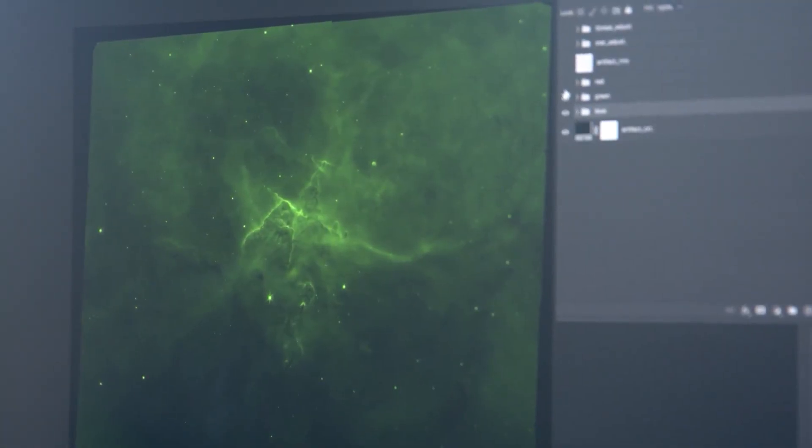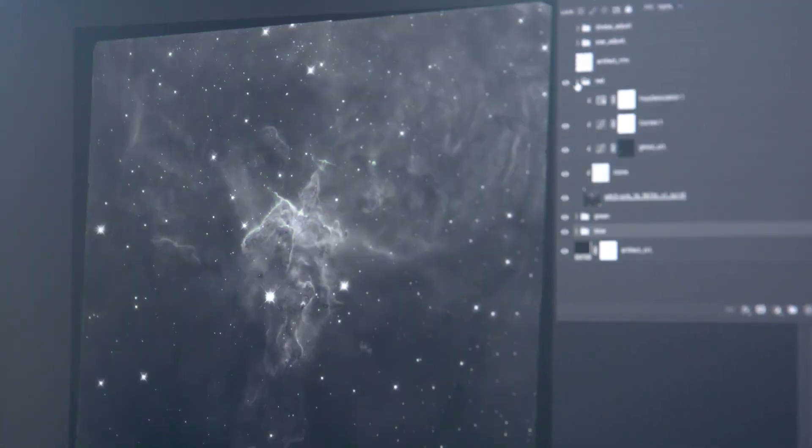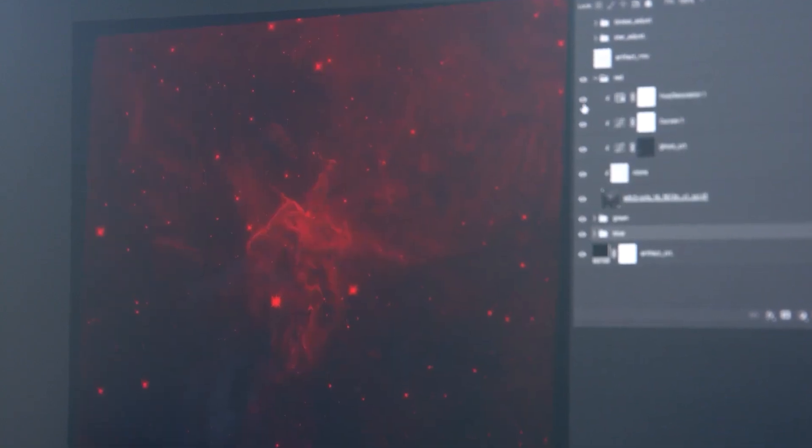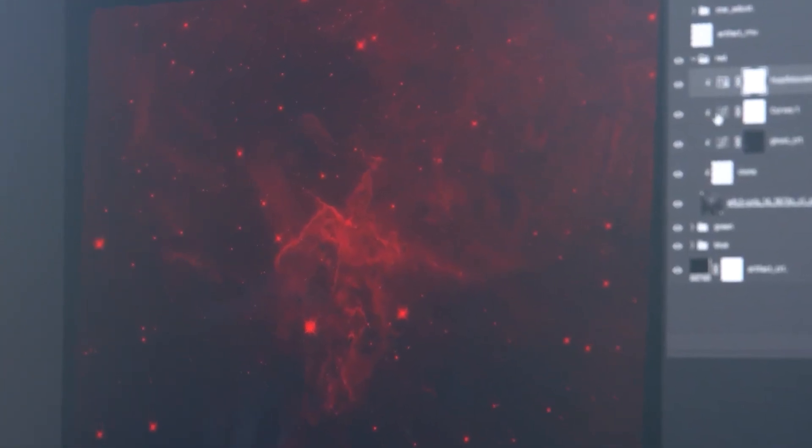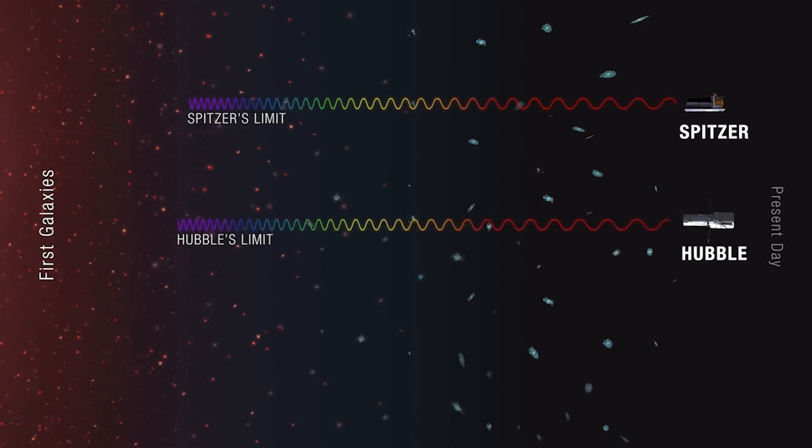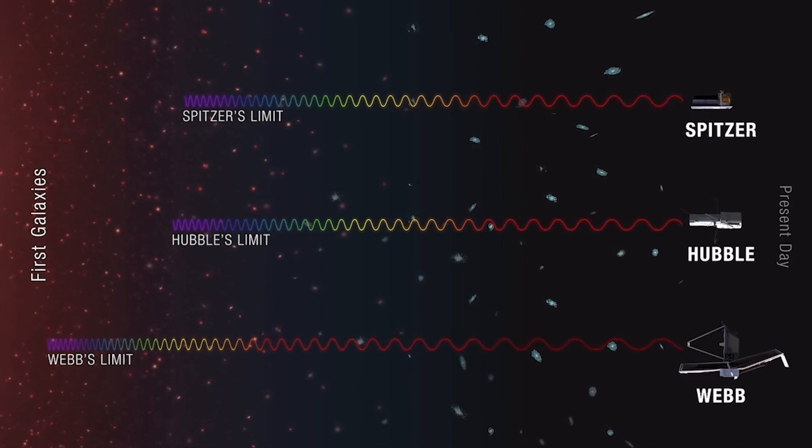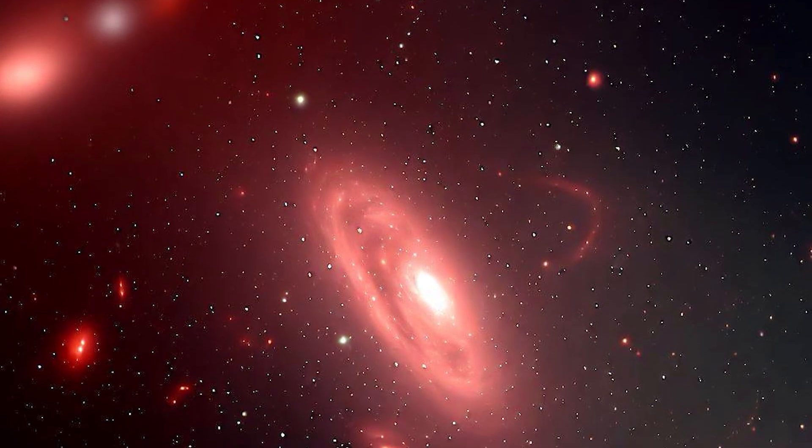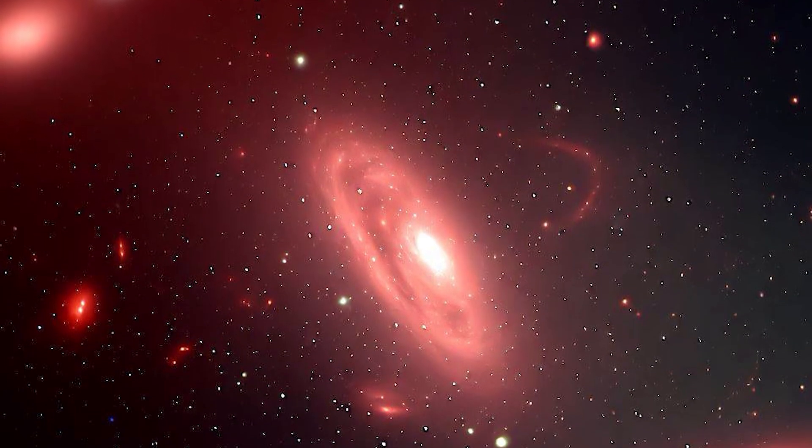JADES takes advantage of the sensitivity and resolution of James Webb in the infrared, making it possible to detect light from very distant objects that have been red-shifted due to the expansion of the universe. This approach has revealed galaxies with very high redshifts.